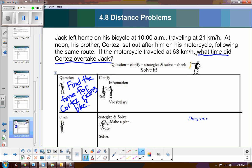So now let's write down the facts. This is very important. So Jack left home on his bicycle at 10. So Jack, he left at 10 a.m. Now since I'm talking about time, let's just add in Cortez here. So Cortez left at noon. Okay, so there's the time. We got that fact, and we got this fact.